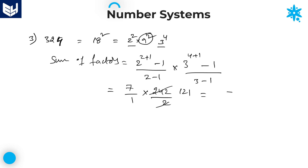The answer is 847. Sum of factors for the number 324 is equal to 847. In this way, we can calculate the sum of factors of any number. In the number systems topic, we have now completed divisibility rules, number of factors, number of ways, and sum of factors — along with the important definitions essential for number systems. In the next session, we will go ahead with the next concepts. I hope you enjoyed the session. Thank you very much for watching.